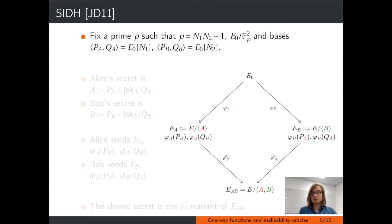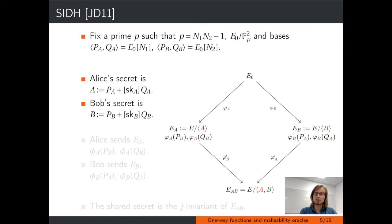The most prominent key exchange in isogeny-based cryptography is the Supersingular Isogeny Diffie-Hellman scheme (SIDH), introduced by Jao and DeFeo in 2011. Let n1 and n2 be smooth co-prime integers — usually a power of 2 and a power of 3 — and let p be a prime of the form n1 times n2 minus 1. Fix a curve E0 defined over Fp², and two bases of E0, namely of the n1 and n2 torsion. Alice picks an order-n1 subgroup of E0 as her secret isogeny; Bob chooses an order-n2 subgroup. Both compute the corresponding isogeny and send each other the resulting curves EA and EB. Alice sends the image of the n2 torsion basis to Bob, and Bob sends the image of the n1 torsion basis to Alice.